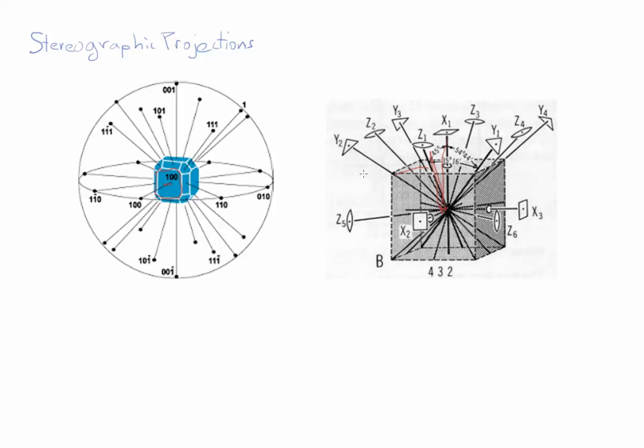It's difficult to illustrate these on a two-dimensional surface, on a piece of paper. A stereographic projection is a way to reduce this three-dimensional object, or this point group, down to a two-dimensional representation.